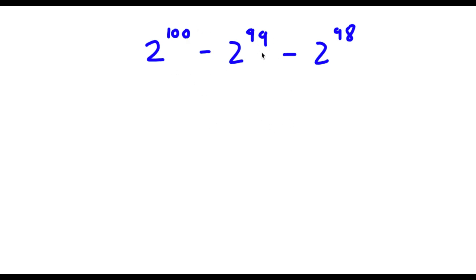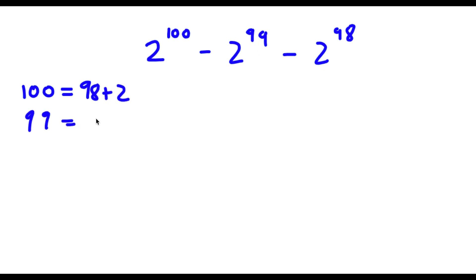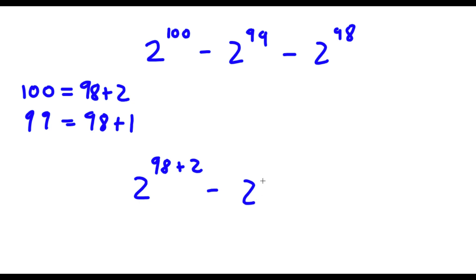Alright, so I have 2 to the power of 100 minus 2 to the power of 99 minus 2 to the power of 98. First off, 100 is the same thing as 98 plus 2. 99 is the same thing as 98 plus 1. And 98 is just 98. So now placing these in, I get 2 to the power of 98 plus 2, minus 2 to the power of 98 plus 1, minus 2 to the power of 98.